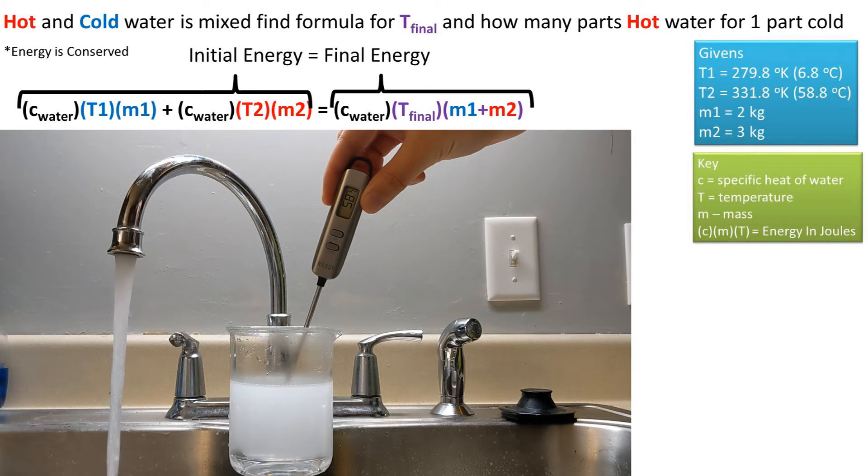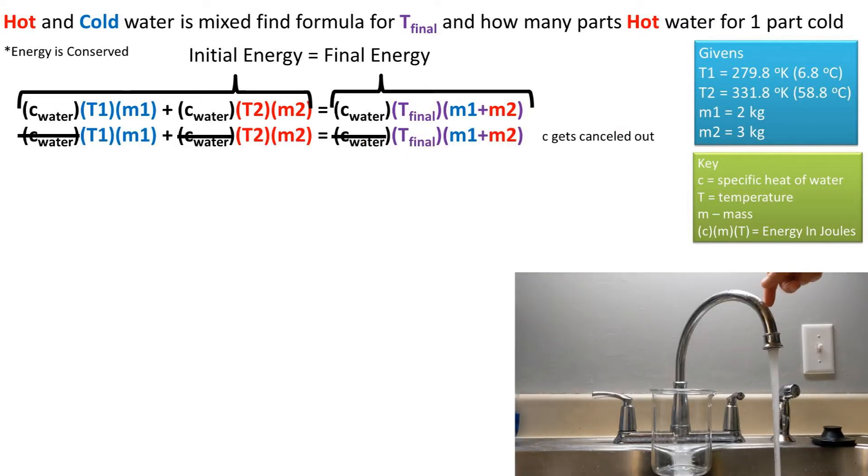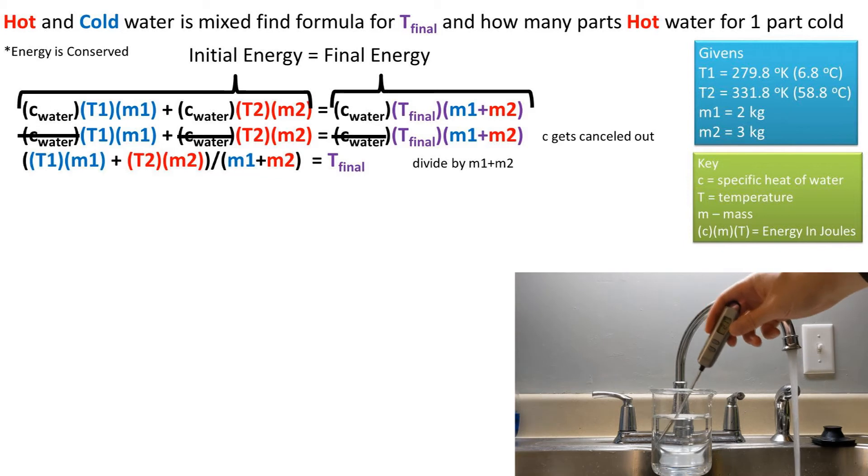Now we need to get Tfinal to one side of the equation. First we notice that specific heat is on either side of the equation, so it can be cancelled out and removed. Next we need to divide both sides by m1 plus m2.